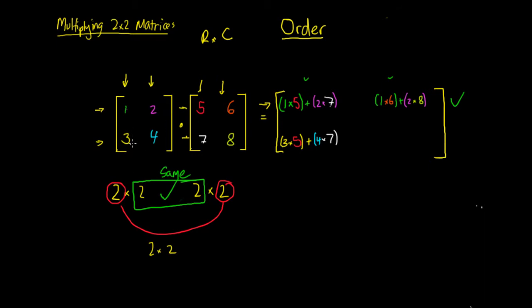We look again and our first term is 3. We're going to multiply 3 by the first term in our second column, which is 6. Then we add to that 4 times the number in our second column, which is 8 — so 4 multiplied by 8. We've run out of terms in our second column, and there's no next row, so we've finished multiplying our matrix.